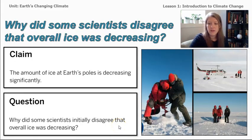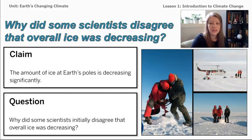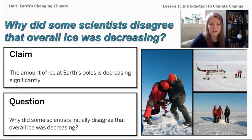Your first task as a student climatologist is to review some data collected about ice melting or decreasing at the poles. It's important to be skeptical and review data carefully. When looking at the data, the question I want you to keep thinking about is: why did some scientists disagree? And there was disagreement — so let's take a look at why that is.